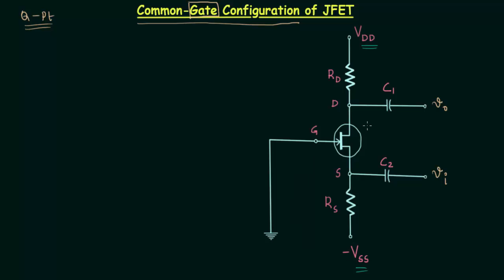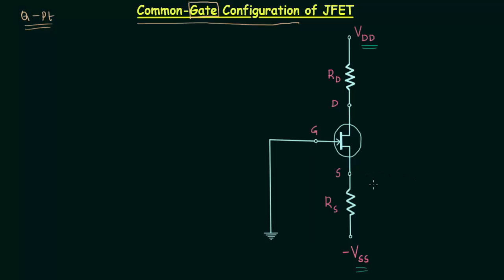So this is the complete circuit. C1 and C2 are the coupling capacitors. As we are performing DC analysis to find out the operating point, C1 and C2 will offer infinite reactance for DC signals. So we can open-circuit C1 and C2 and the simplified circuit will allow us to easily find out the operating point.